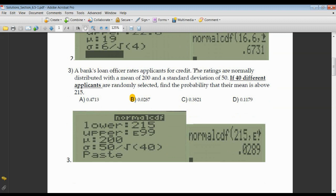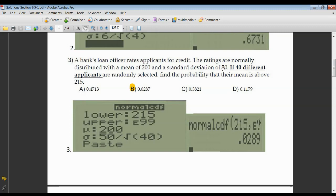Number three, bank loan officer rates applicants for credit. Find the probability that the mean of these 40 different applicants is above 215. Above means you're getting larger. Your lower limit 215, your upper is E99. Mean is given to us as 200. The standard deviation is the original standard deviation for one applicant divided by n. How many applicants we're talking about? 40 in this case. And hitting paste. Your answer comes out to be 0.0289. And the correct answer is 0.0287.